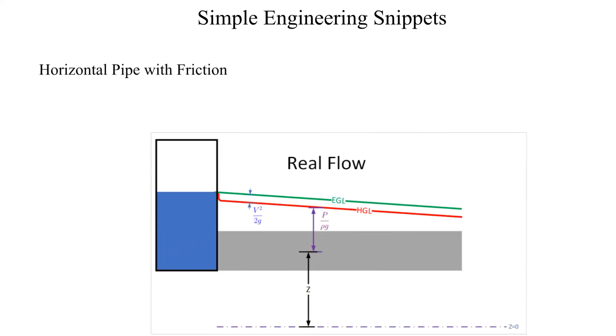Friction results in a decrease in both total head and piezometric head, as indicated by the negative slopes of the energy and hydraulic grade lines.